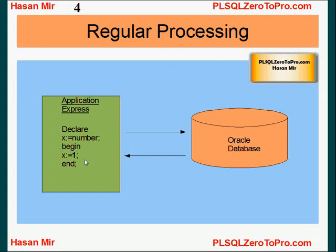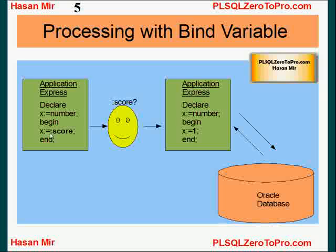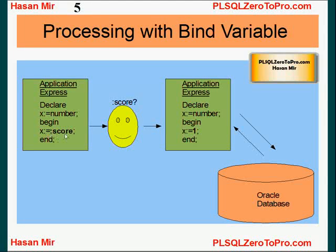But if your program contains a bind variable, something different happens. You know there's a bind variable because there will be a colon at the beginning of the variable name — don't confuse this colon with the assignment operator colon, those are two different things. As soon as the query tool senses a bind variable when you run the program, the query tool first scans the whole program. If there's a bind variable, then before the program is sent over to Oracle, the user is asked to enter a value to substitute the bind variable. The bind variable substitution is done at the query tool level.